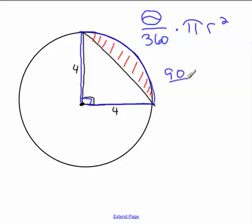So you go 90 over 360 times pi times your radius squared, which would be 4 squared. 90 over 360 reduces to a quarter, pi times 16, 16 times a quarter is 4 pi.